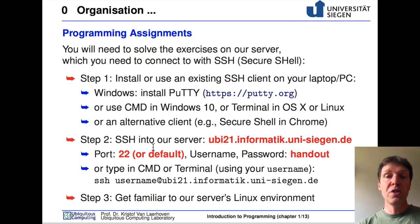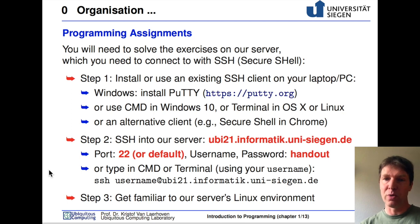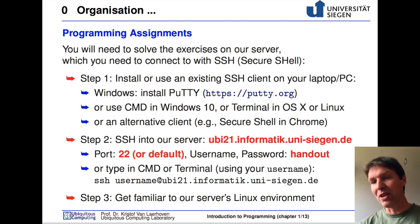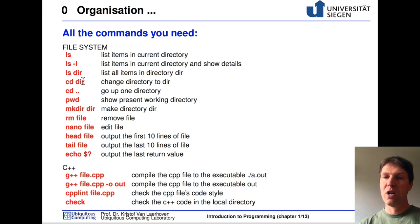Once you have the software, you use it to SSH into our server by providing the server name. You use port 22, which is usually the default. You also need to provide a username and a password — these will be sent to you via email. Once you have this, you can type the command in the terminal or set the settings in software like PuTTY, and then you can connect and get a command line console to our server where you can start programming. It's very important to get yourself familiar with our server's Linux environment. I have in this slide set already printed the most important commands that you'll need to navigate around in this shell.